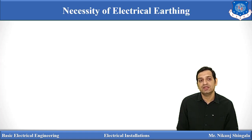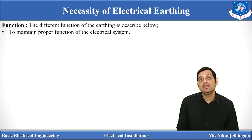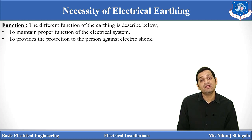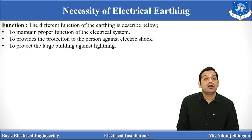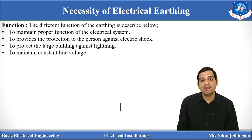Why is earthing necessary? The function of earthing is: it is used to maintain the proper function of the electrical system; it provides protection to persons against electrical shock; it is also used to protect large buildings from lightning; and it is used to maintain a constant line voltage.